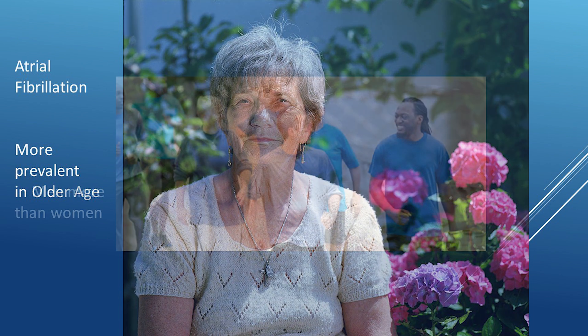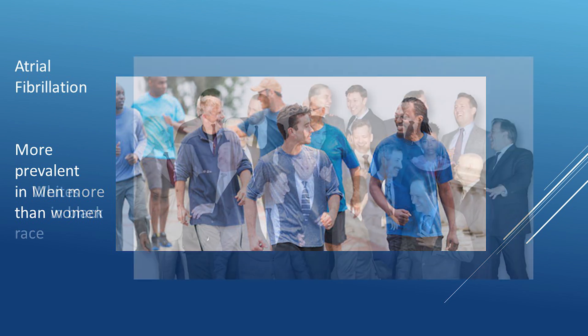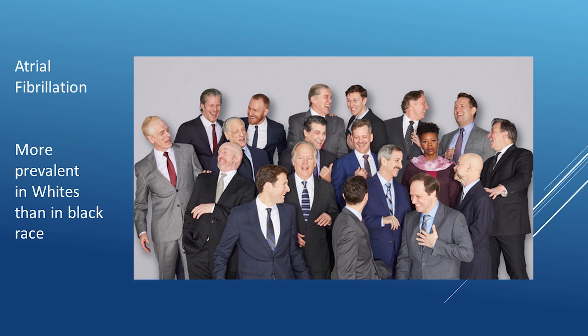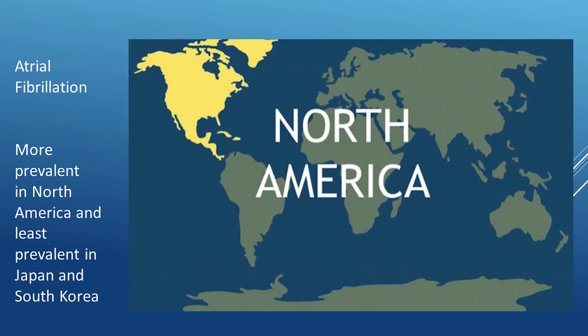Regarding gender, the prevalence of atrial fibrillation is higher in men than women. Regarding race, atrial fibrillation is more frequent in whites than blacks over the age of 50 years. Regarding geography, the prevalence rate per 100,000 population is highest in North America and lowest in Japan and South Korea.